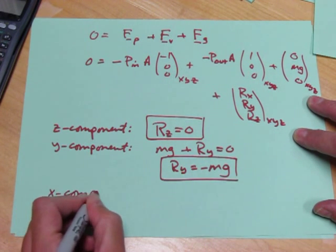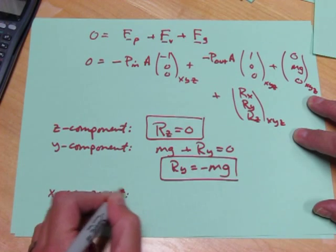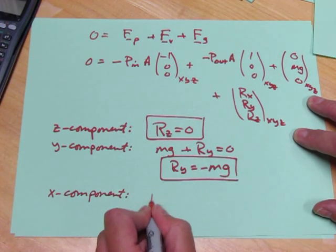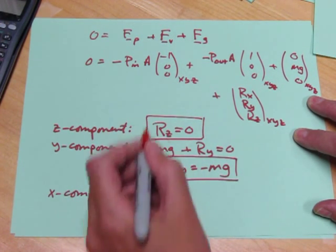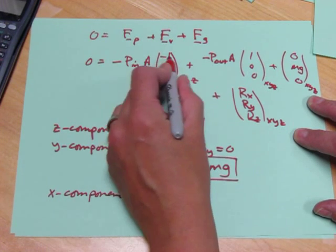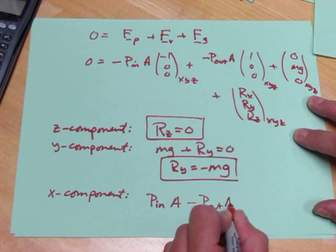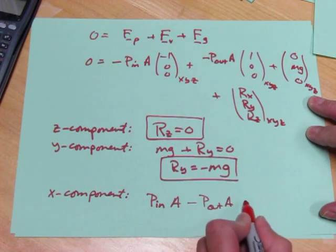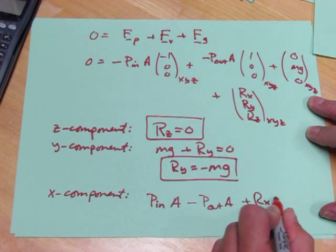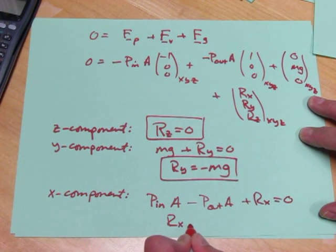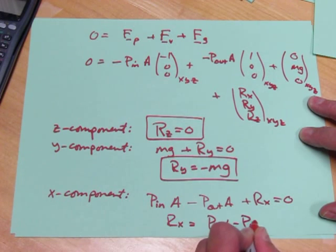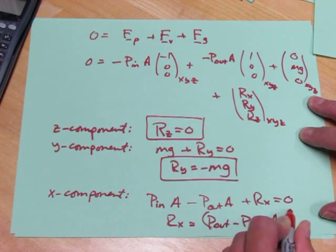And the X component, the X component is plus P in A, minus P out A, plus RX equals 0, RX equals P out minus P in times A. And that's the result.